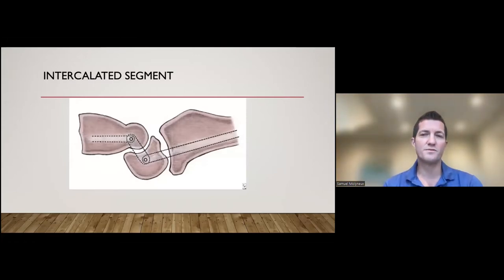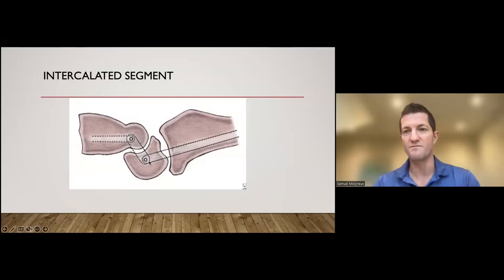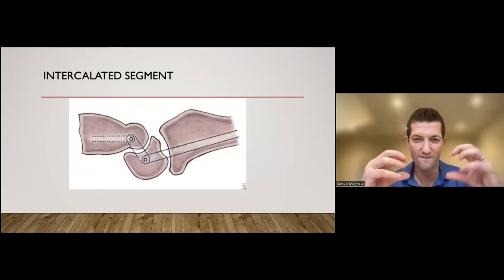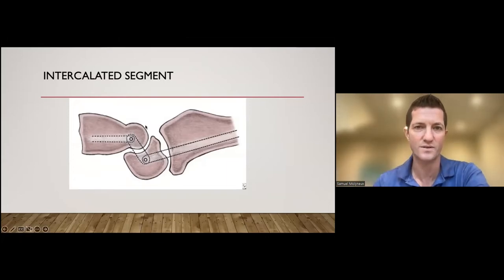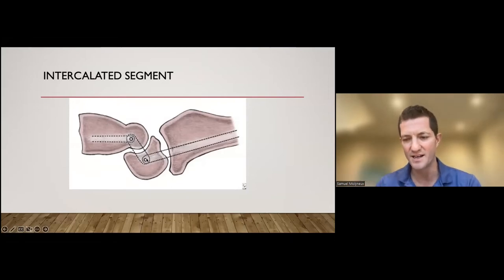When we talk about that proximal row, I was talking about it as an intercalated segment. What does that mean? It basically means that the proximal row essentially has no muscles directly controlling its movements. The movements of the middle row are controlled by the movements of the distal row and by the position of the distal radius. So that intercalated segment is entirely reliant on a very fine balanced control of the rest of the carpus to hold it in position. It's called an intercalated segment with no muscle control going into it.